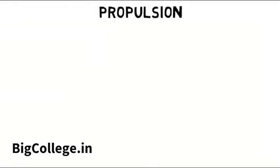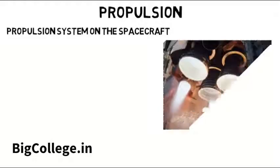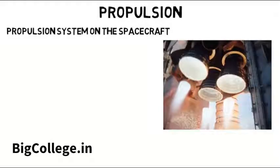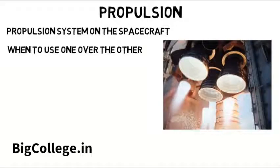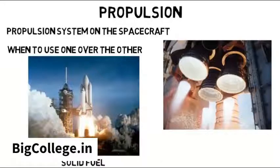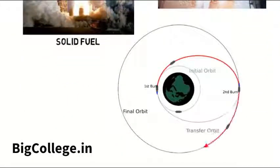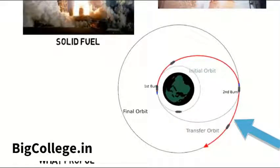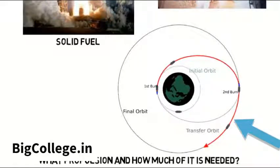Propulsion has to do with the propulsion system on the spacecraft that provides the thrust. There aren't too many propulsion methods, but it's all about knowing when to use one over the other and accounting for all the little details. For example, launching a rocket uses a solid fuel, kind of like gunpowder, which is a powerful type of propulsion to overcome gravity on the spacecraft. But if the spacecraft is in orbit, you might need it to change to a different orbit, so you need to determine what propulsion and how much of it is needed to provide the change in velocity that you want.